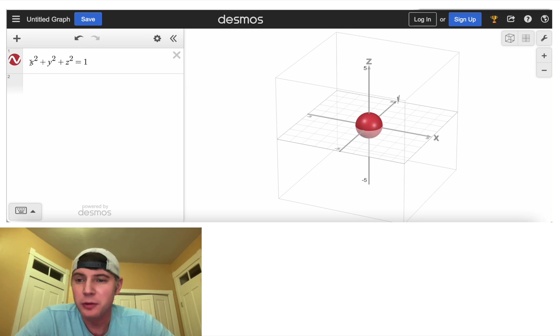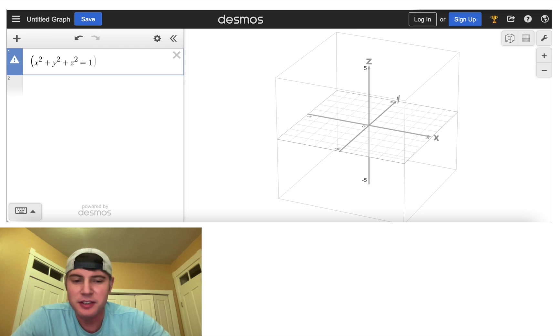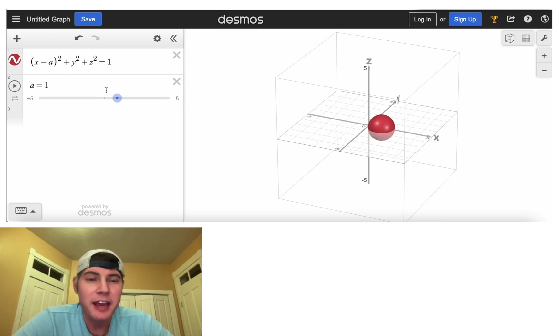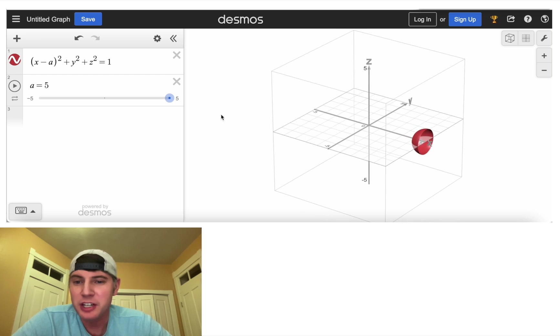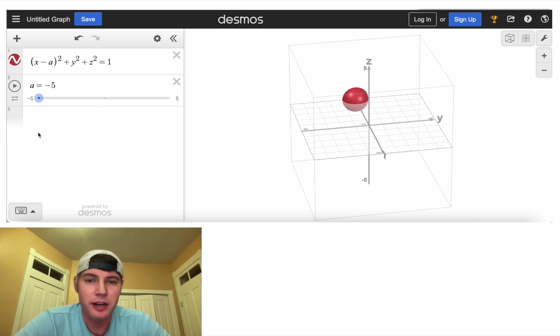And next, if we want to move the sphere, we can put this x in parentheses and hit minus a and add a slider. And now as we move the a on the slider, it'll go left and right. You can see we actually leave—it's fun, you can see inside the sphere. But we could actually leave the box and go left to right.